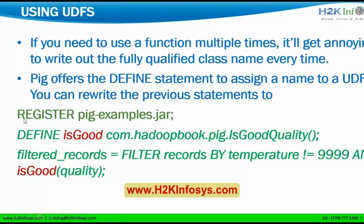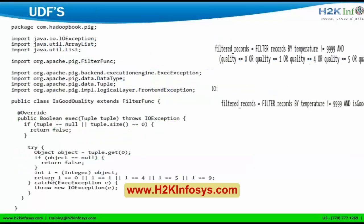Once you write your register command, you can define it using DEFINE: for the whole com.hadoop.book.pig.isGoodQuality, I can give it a name as isGood. So from the next time onwards, I can just call this function as isGood instead of com.hadoop.book.pig.isGoodQuality. I am just defining short names for my functions — it will be much more user-friendly at the time of writing programs.